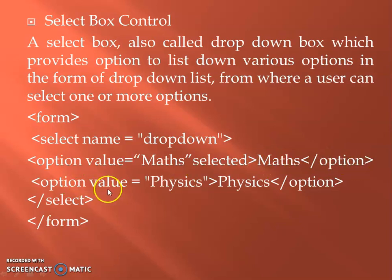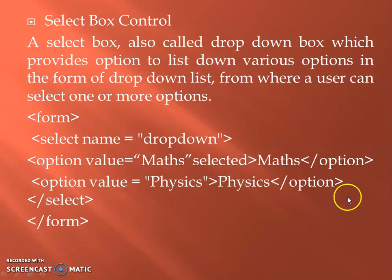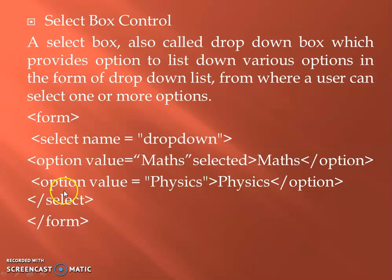The second option is open: value equal to Physics. You can display it. If you want to create a drop-down list of Maths and Physics, you can add a drop-down list with multiple options. Let's close the option and close the select tag.